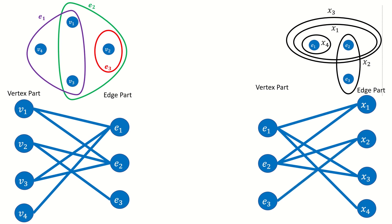The two incidence graphs are isomorphic to each other. Notice that the edge part of the incidence graph of h is the vertex part of the incidence graph of the dual of h, and how the vertex part of the incidence graph of h corresponds to the edge part of the incidence graph of the dual of h.